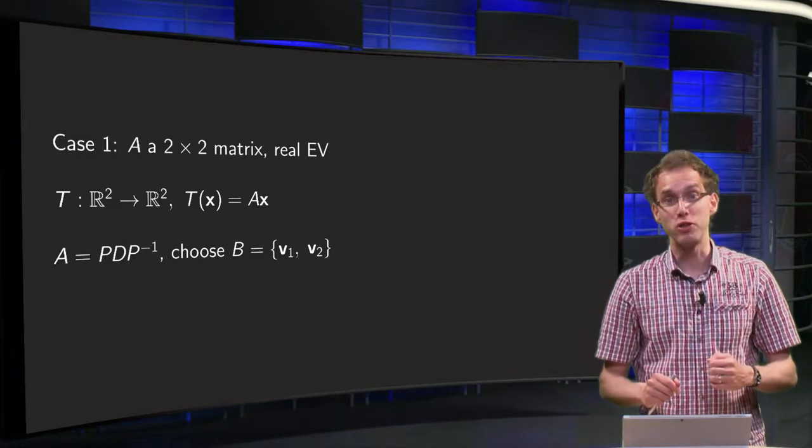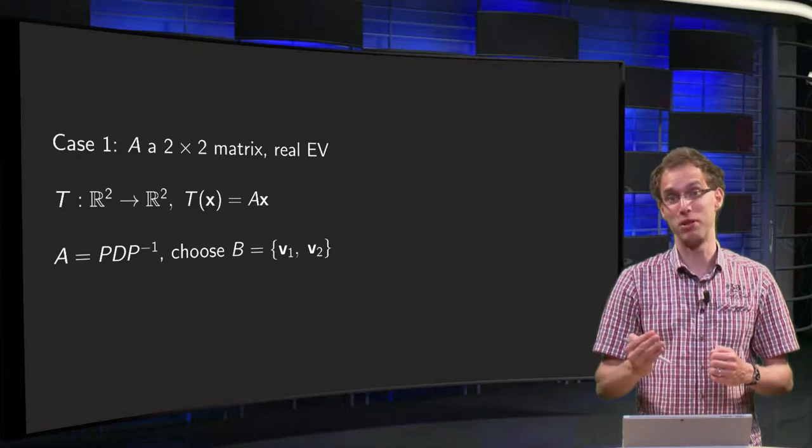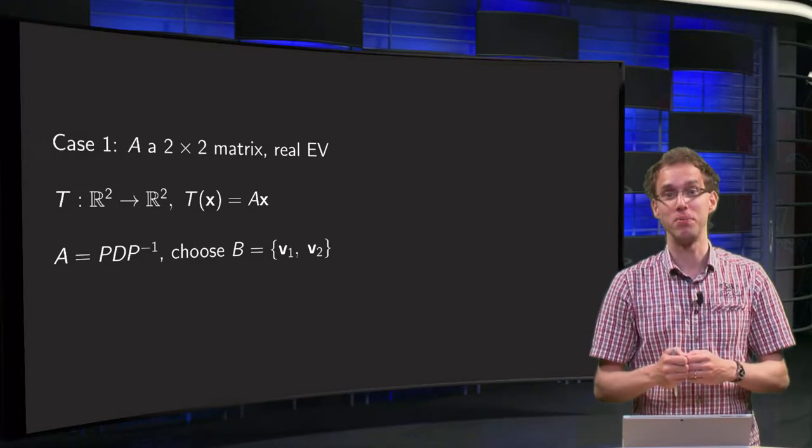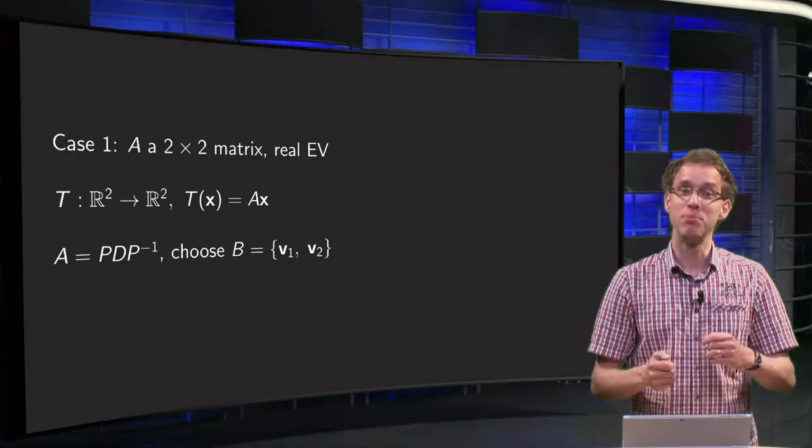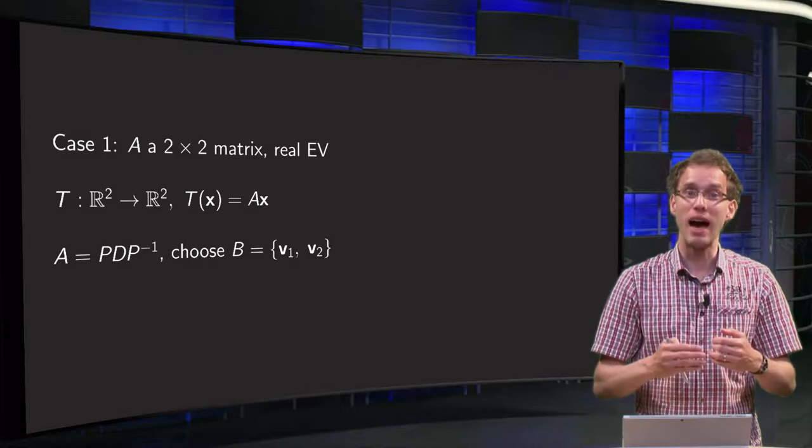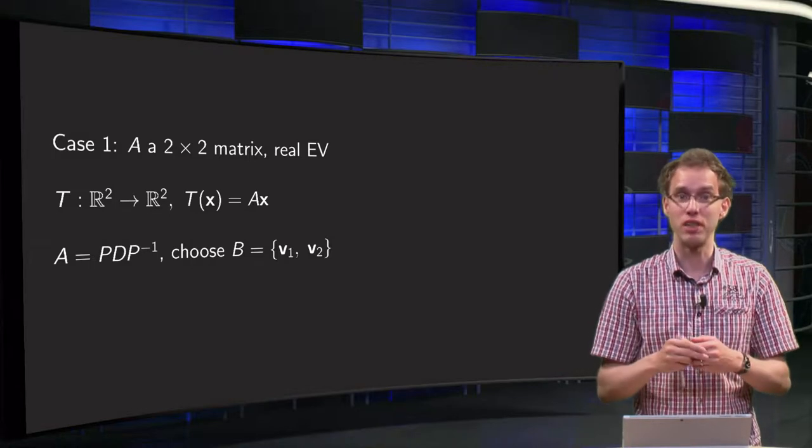We know that a 2×2 matrix is either similar to a diagonal matrix D or similar to a scaling-rotation matrix C. This means we can view any linear mapping from R² to R² either as a stretching or as a scaling and rotation.